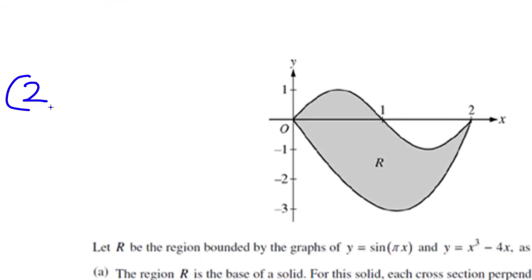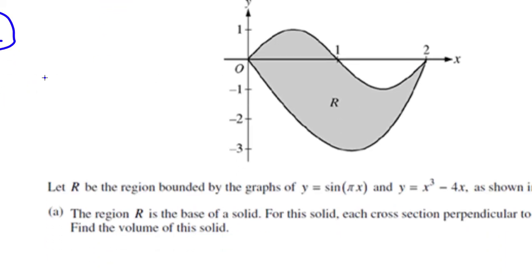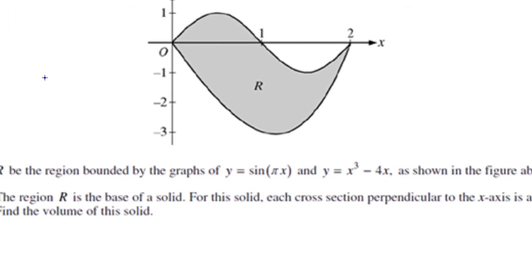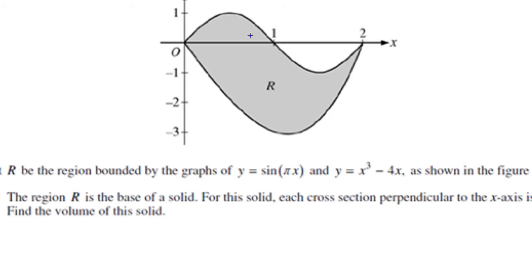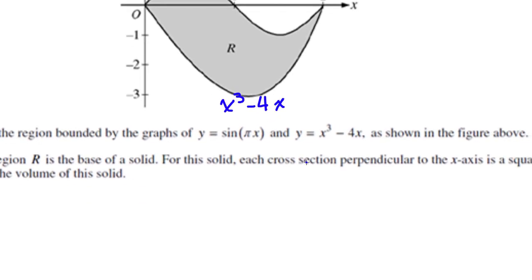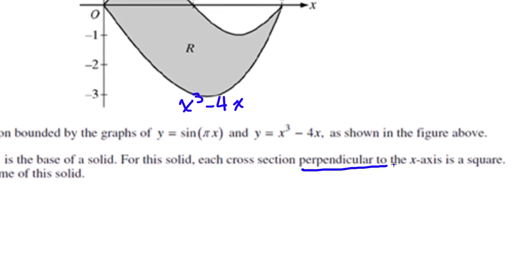Number 2: another region R — one function is sine, one is x cubed. A sine wave by default goes up and down with the same amplitude of 1, so the top curve is sine of πx, and the bottom one is x³ minus 4x. Perpendicular to the x-axis, so I automatically assume that's going to be dx.